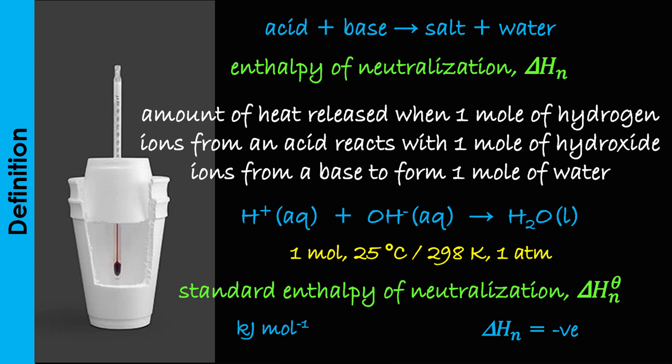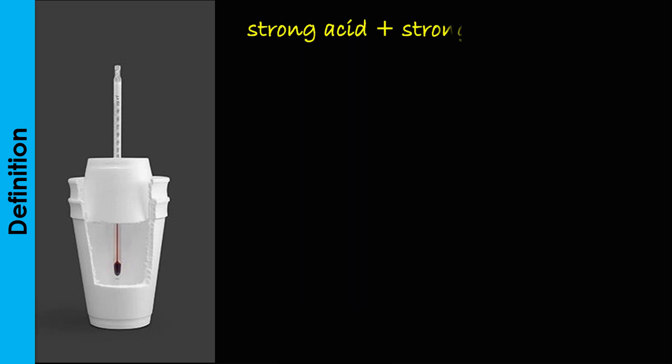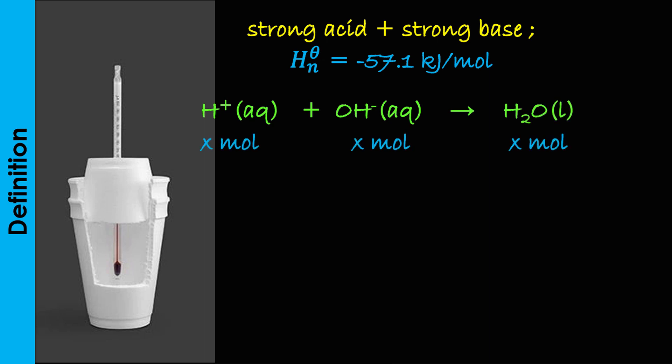The standard heat of neutralization between a strong acid and a strong base is always a constant of about –57.1 kJ per mole. This is due to the complete ionization of the acid and base in solution, which means that the number of moles of water that will be formed will always be constant, due to the fixed amount of hydrogen and hydroxide ions that will be available for reaction in the solution mixture.